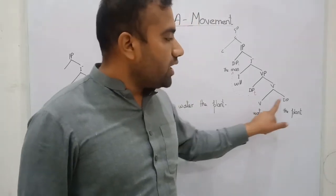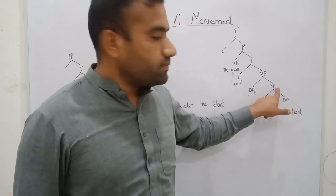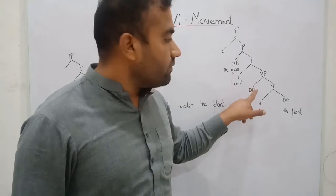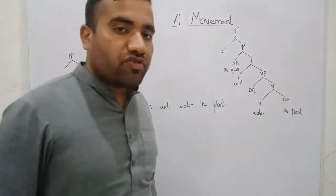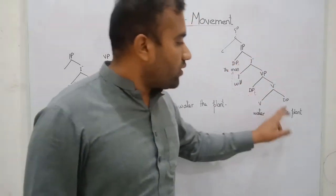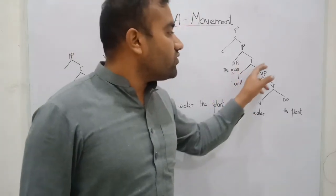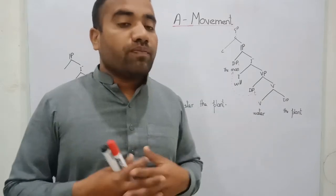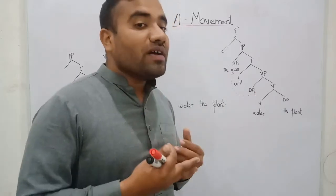Verb. It takes DP as complement and it constructs the V-bar. Then it introduces its external argument, that is the man. This is our argument structure, the basic argument structure. In this domain we have two DPs: first the plant, second the man. And in this position we have assigned all the DPs the role. That is, the role of all the DPs has been valued. And what is remaining back?